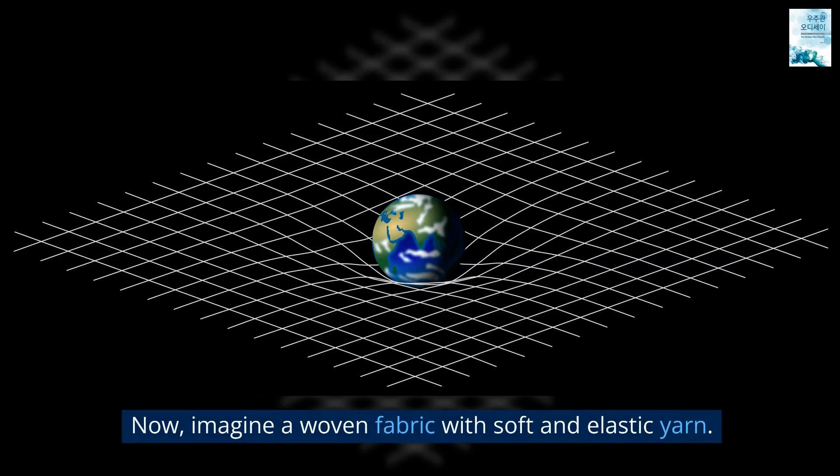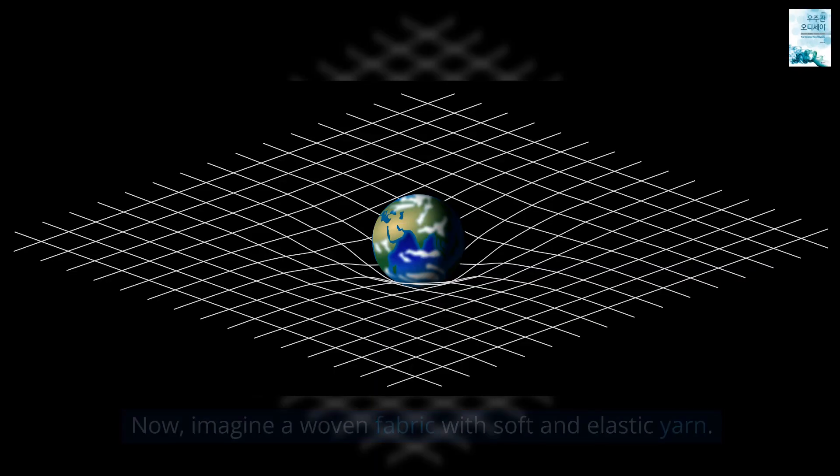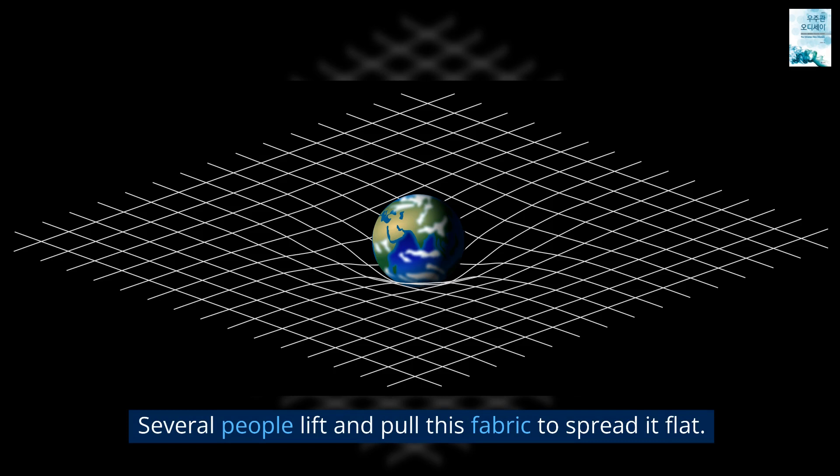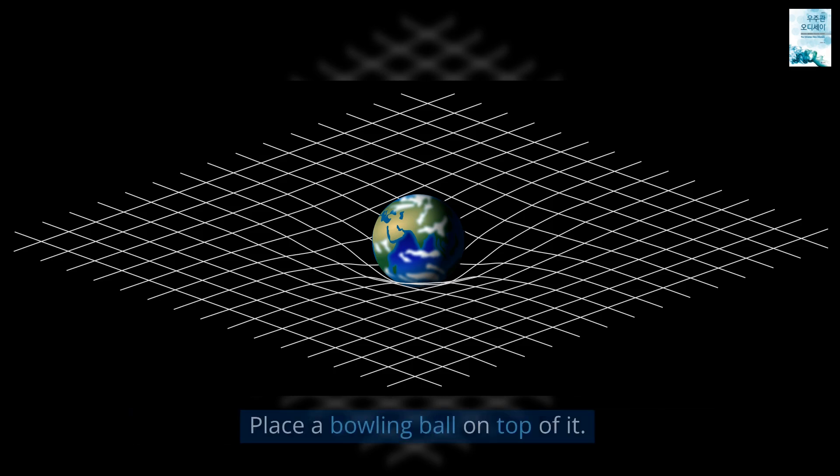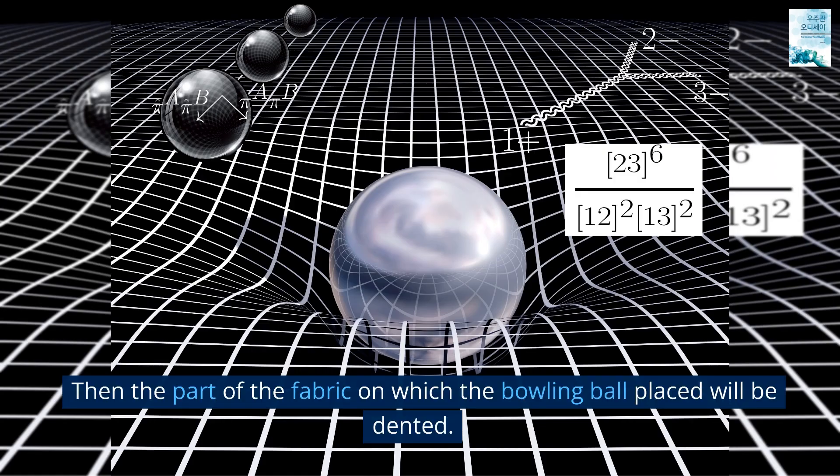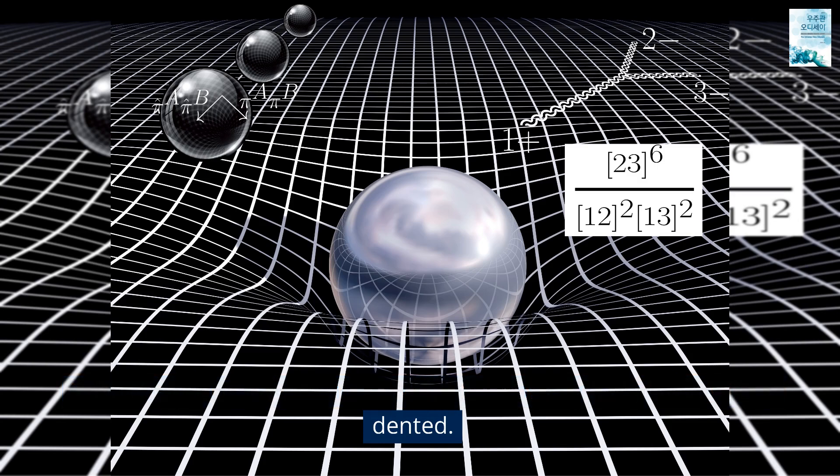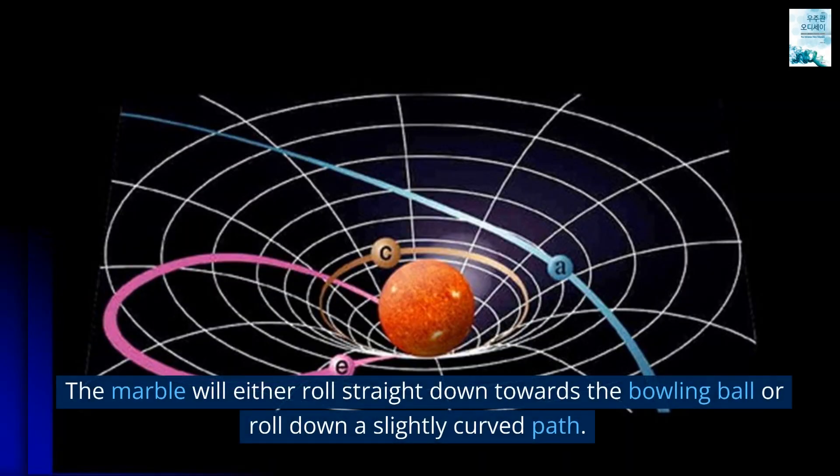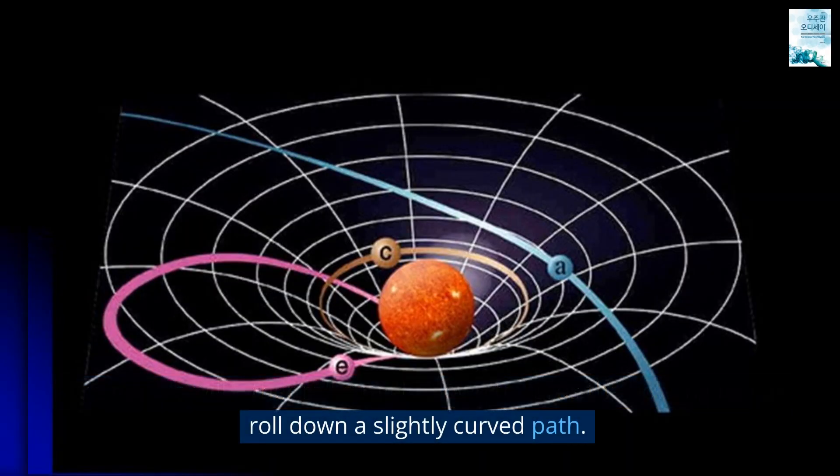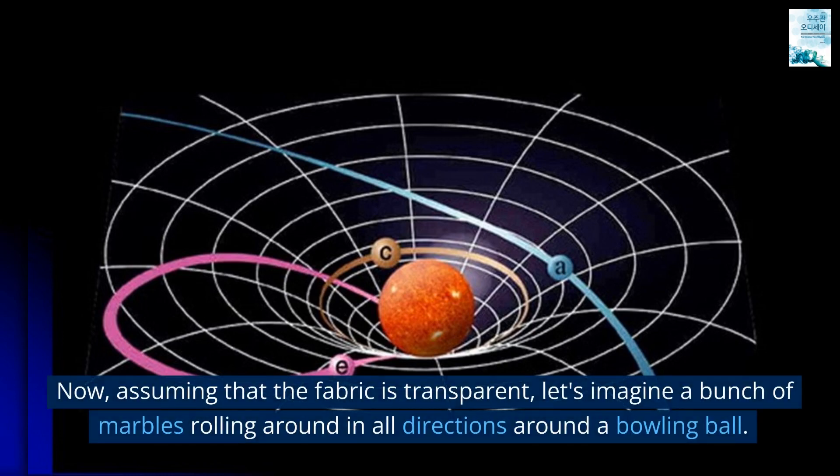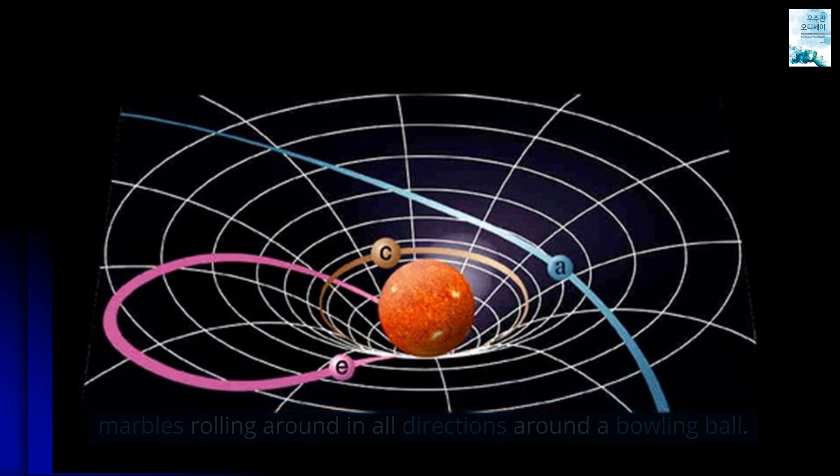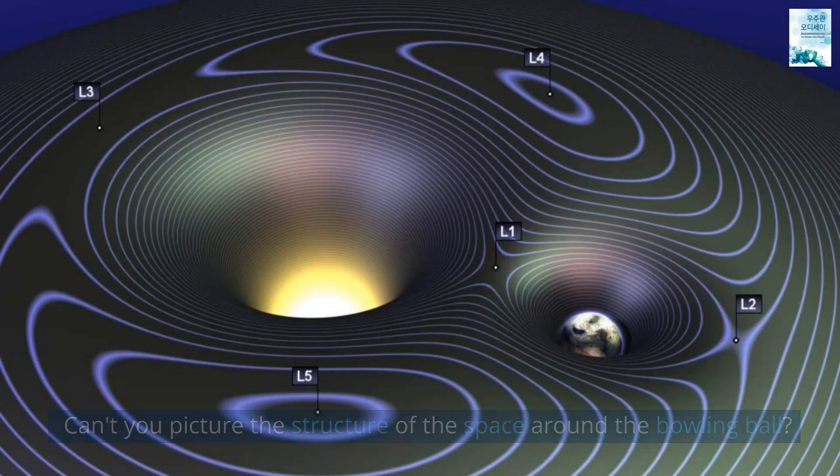Now imagine a woven fabric with soft and elastic yarn. Several people lift and pull this fabric to spread it flat. Place a bowling ball on top of it. Then the part of the fabric on which the bowling ball placed will be dented. Roll a small marble around it. The marble will either roll straight down towards the bowling ball or roll down a slightly curved path. Now assuming that the fabric is transparent, let's imagine a bunch of marbles rolling around in all directions around a bowling ball. Can't you picture the structure of the space around the bowling ball?